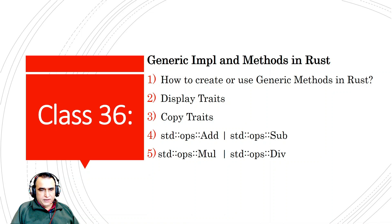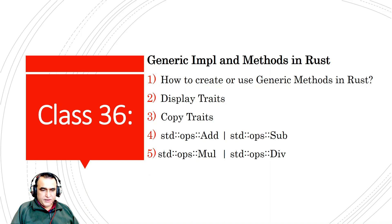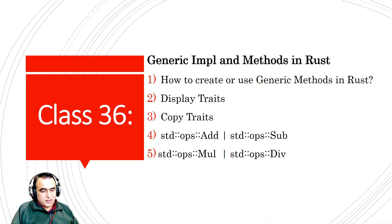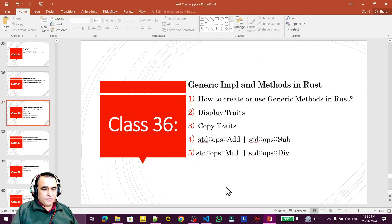In this video we are going to understand generic impl and methods in Rust — how to create generic methods using structures, and how to use Display, Copy, std::ops::Add, Sum, Mul, and Div traits. This is class number 36, and it's very important but also a bit difficult, as it involves high-level programming concepts.